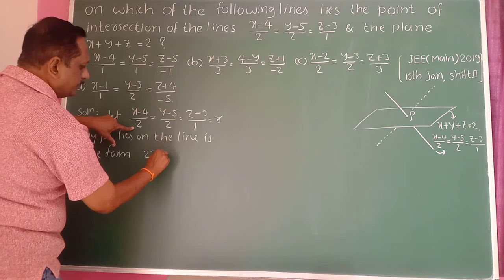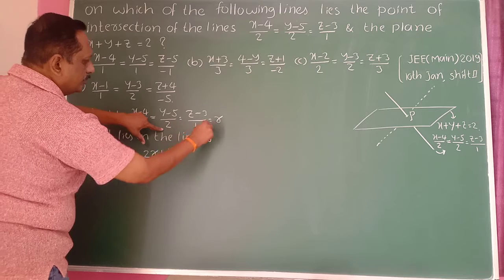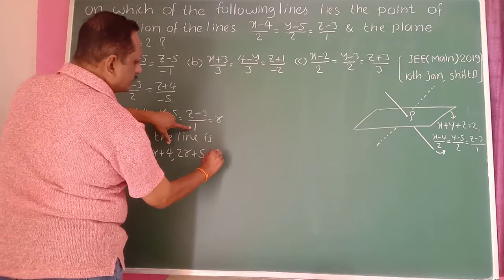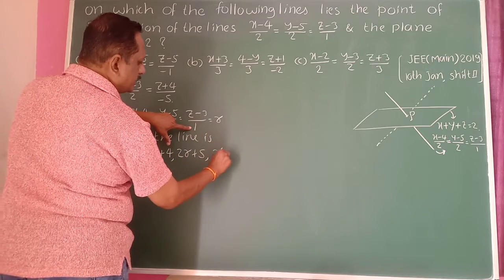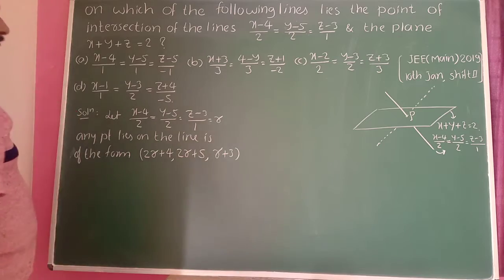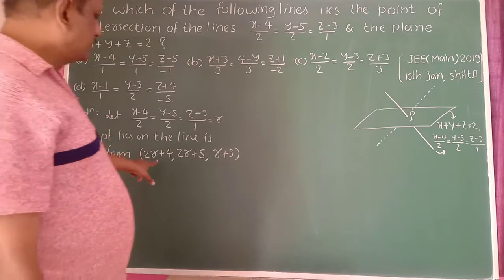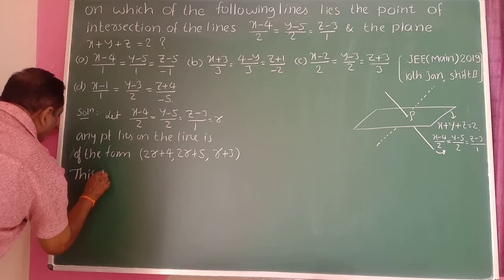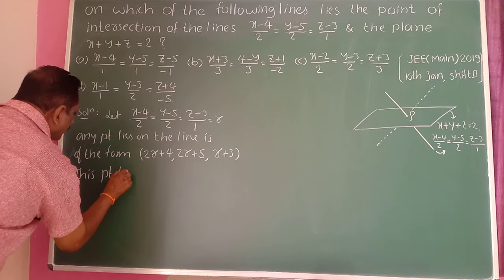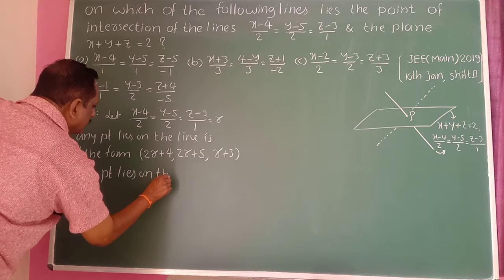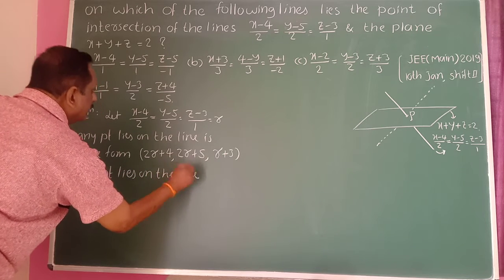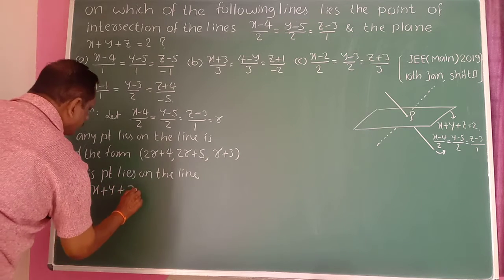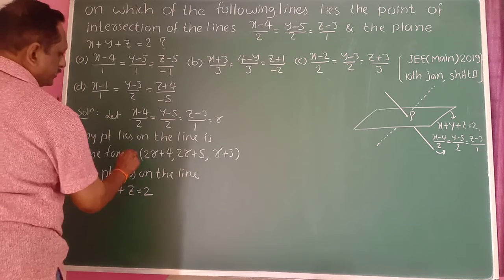Take minus 4 to the right hand side, it becomes plus 4, so x = 2R plus 4. Similarly, 2 into R gives 2R, take minus 5 to the right hand side, it becomes plus 5, so y = 2R plus 5. And 1 times R gives R, take minus 3, so z = R plus 3. This gives a general point P on the line.